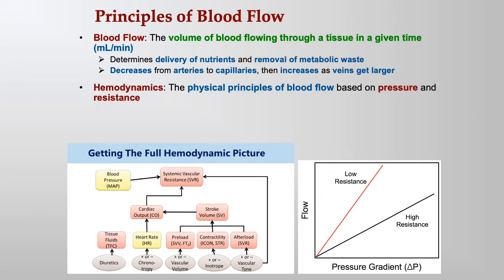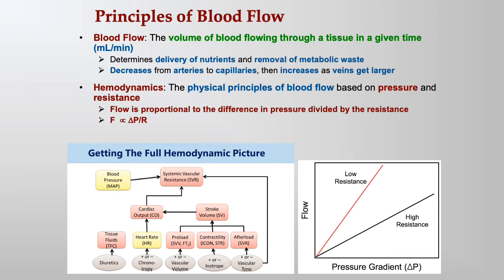Hemodynamics refers to the physical principles of blood flow based on pressure and resistance. Pressure is what moves blood forward; resistance is what inhibits it from moving forward. Flow is proportional to the difference in pressure divided by resistance — the pressure at point A minus the pressure at point B, divided by resistance, gives you a measure of flow.